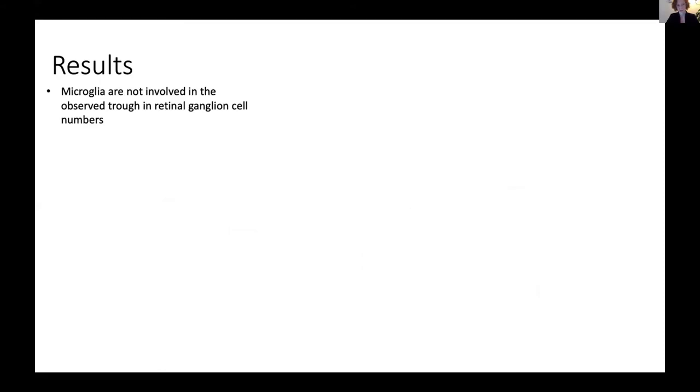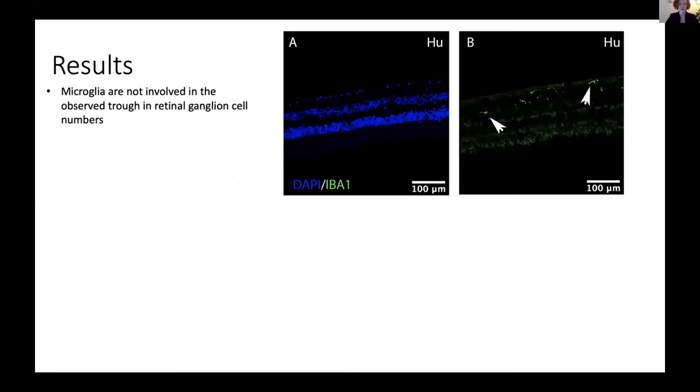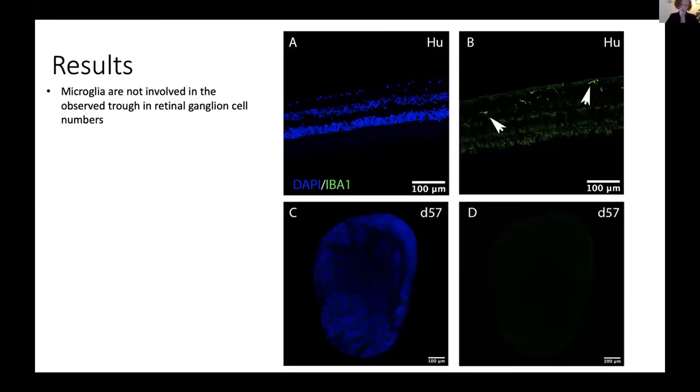Second, microglia are not involved in the observed trough in retinal ganglion cell numbers. We used a post-mortem human retina as a positive control shown in these immunofluorescent images. The white arrows point at the positive stained microglia in green. However, there was no positive staining for microglia in any of the retinal organoids at collection time point 57, shown in these bottom two images. These results suggest that microglia are absent from retinal organoids and cannot account for the dip in retinal ganglion cell numbers during the first wave of cell death in humans.